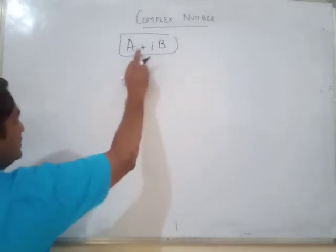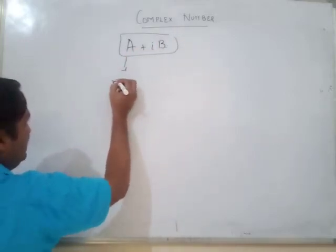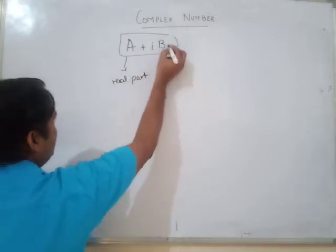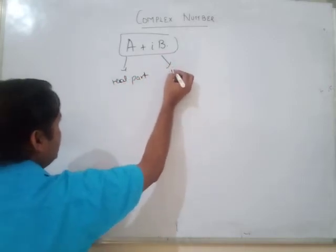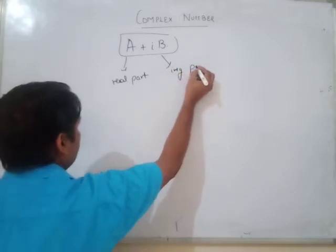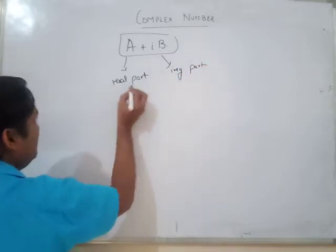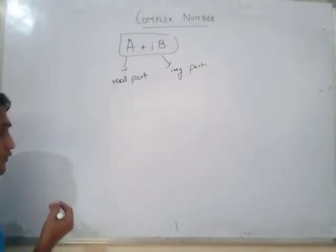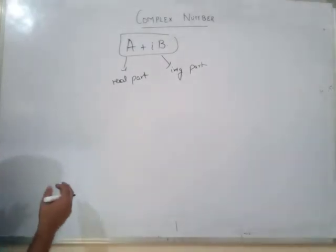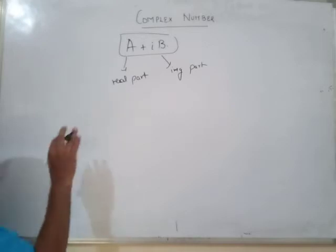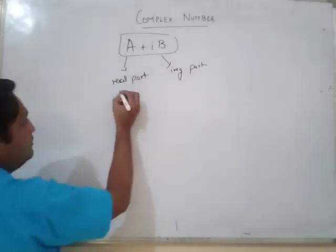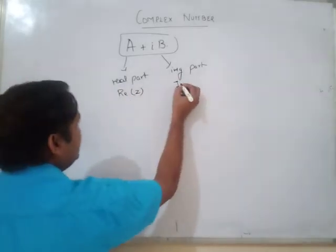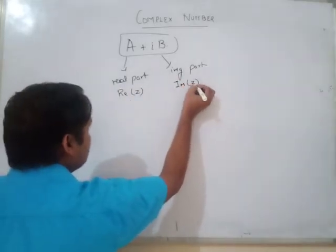You should be familiar with A. A will be the real part and iota B is called the imaginary part. It can be any number — 2, 3, 4, 5, 6, any number. Iota B is called the imaginary part. We will denote A as real part of Z and iota B as imaginary part of Z.